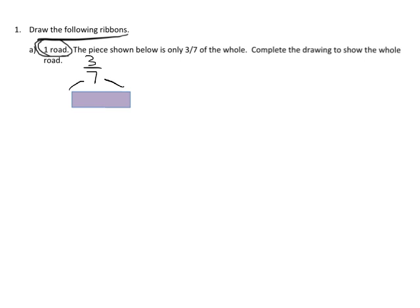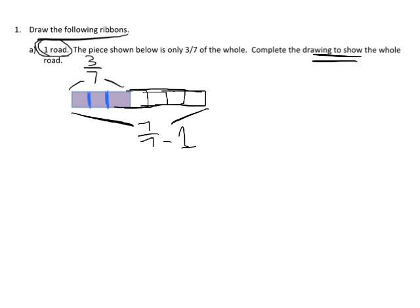What I do is when I see that this is three-sevenths, I cut in my mind or I'm going to do it literally right here into three pieces. Now why did I cut it into three pieces? Because we're told that there's three out of seven pieces. So here's my three out of seven pieces and if we're supposed to complete the drawing and draw the whole road that means we should see seven little pieces. So one, two, three, four, five, six, seven. There is seven out of seven or one whole.